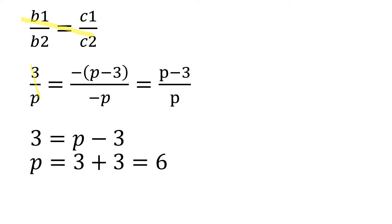So b1/b2 equals c1/c2. We get 3/p equals -(p - 3)/(-p). The minus minus gets cancelled. (p - 3)/p equals 3/p. So 3 equals p - 3, therefore p equals 3 plus 3 equals 6.